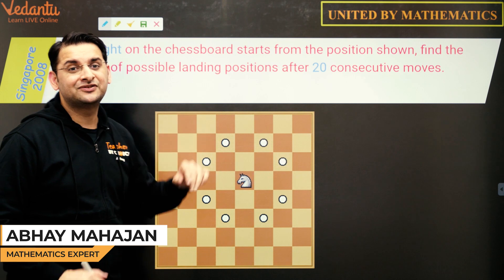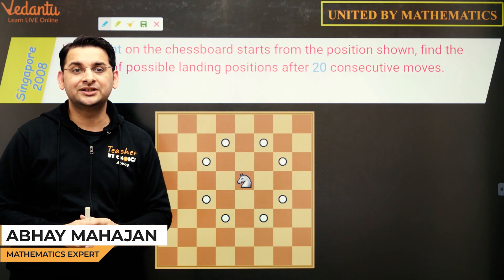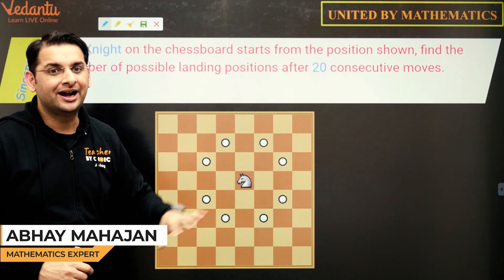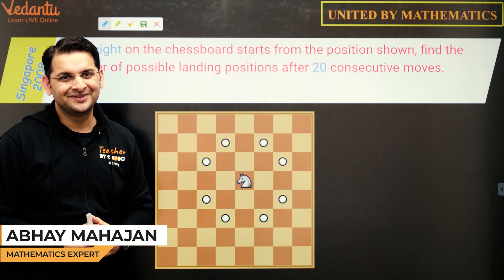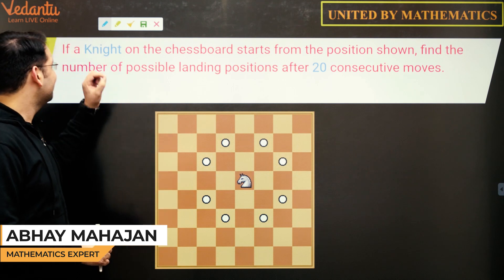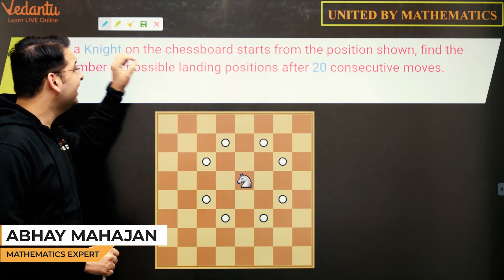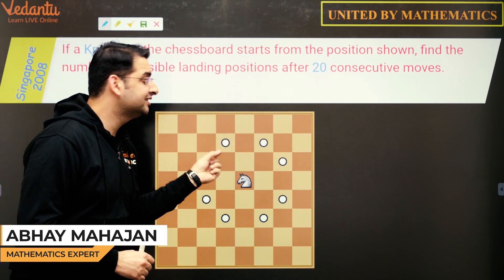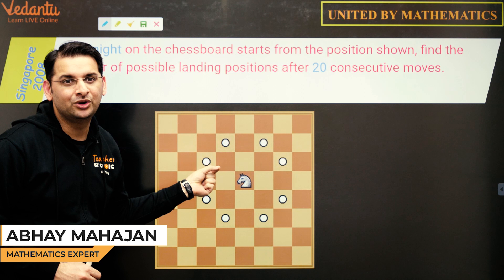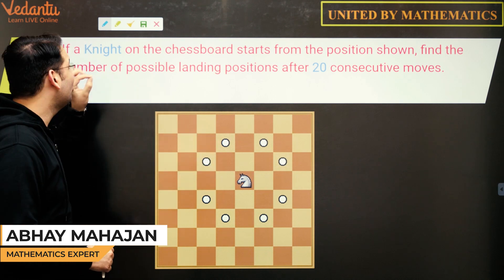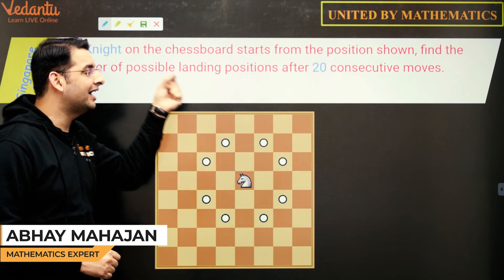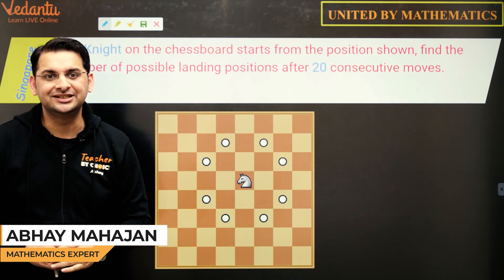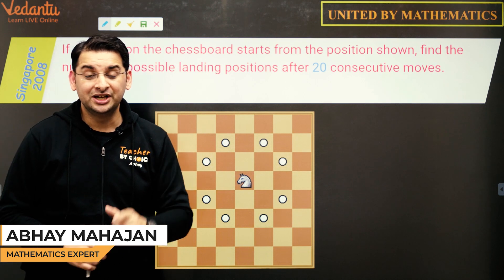This problem is from the Singapore 2008 Junior Mathematics Olympiad and it involves a chessboard. The question is: if a knight on a chessboard starts from the position as shown, find the possible number of landing positions of the knight after 20 consecutive moves.